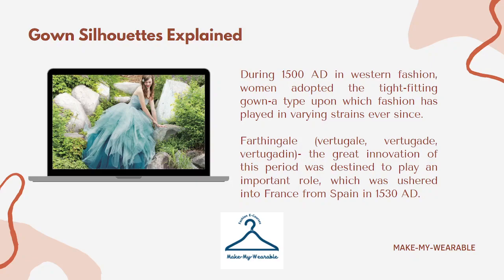During 1580, in Western fashion, women adopted the tight-fitting gown, a type upon which fashion has played in varying strains ever since. The underskirt was called the farthingale, which was a great innovation of this period, destined to play an important role. It was ushered into France from Spain in 1530 AD.